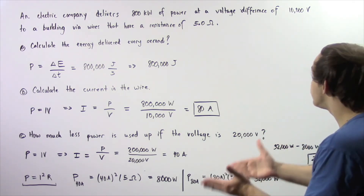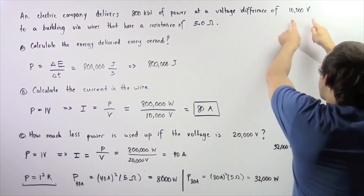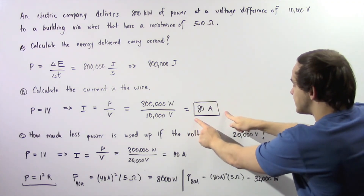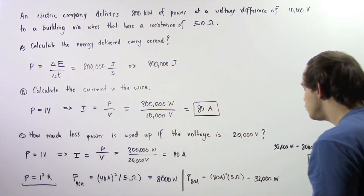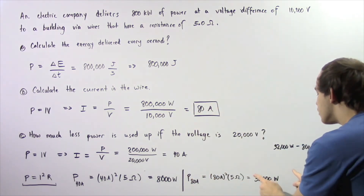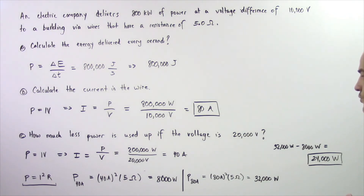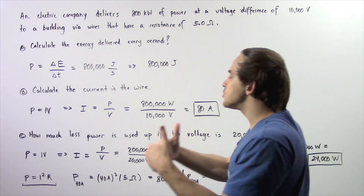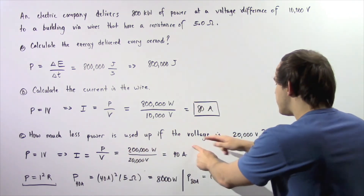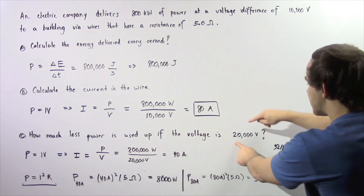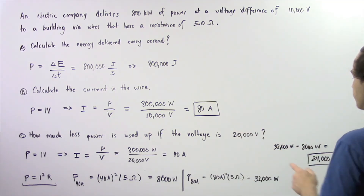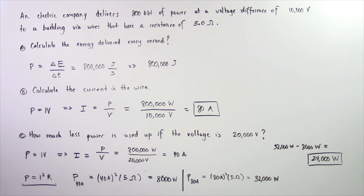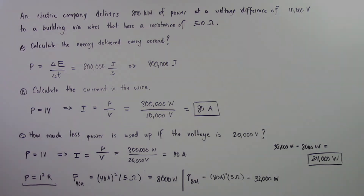So when the voltage is 10,000 volts, the electric current is 80 amps and the power usage is 32,000 watts. To find how much less power is used up when the voltage is 20,000 volts, we subtract: 32,000 watts minus 8,000 watts gives us a difference of 24,000 watts.